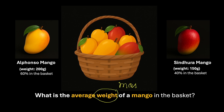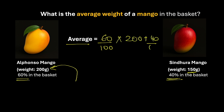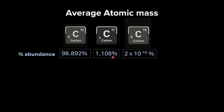Note that even though weight and mass are different in physics, we're using them interchangeably here. To find the average weight of a mango, we take: (percentage abundance of Alphonso × weight of one Alphonso) + (percentage abundance of Sindura × weight of one Sindura). That gives us (60/100 × 200) + (40/100 × 150) = 120 + 60 = 180 grams as the average weight of a mango in the basket.